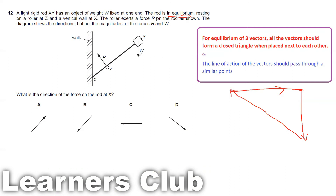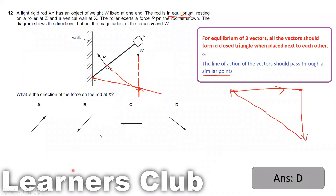The two known forces are the weight W and the roller force R. Extending the lines of action of these two vectors, their intersection gives the common point through which all lines of action must pass. The force at X must therefore also pass through this intersection point, pointing in that direction.